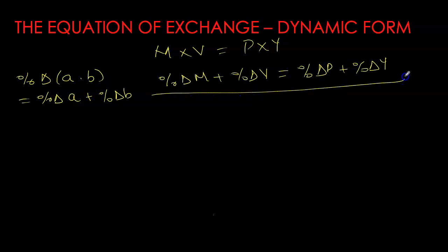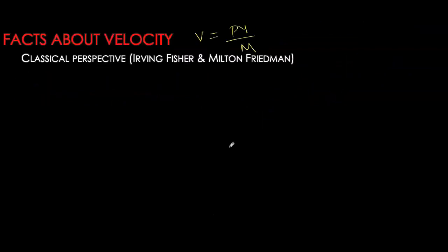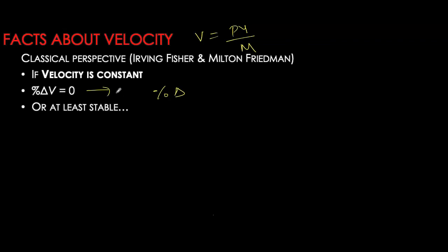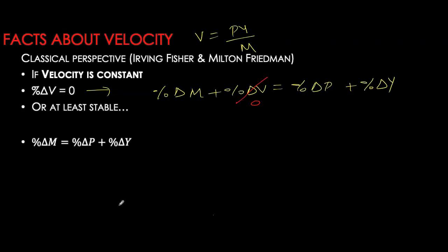The positive relationship between money growth and inflation seen in the data requires us to discuss velocity further. The classical perspective — from Irving Fisher and Milton Friedman — is that velocity is pretty much constant. Classical economists believe velocity depends on underlying institutions, and it takes many years for technological and financial innovation to change it. Sticking to this classical perspective, we'll assume velocity to be constant for now. If the percentage change in velocity is zero, it has a huge impact on our equation of exchange, and we are left with: money growth rate equals inflation rate plus real GDP growth rate.